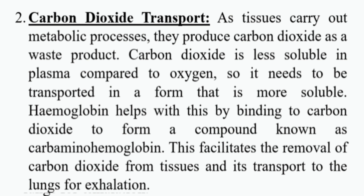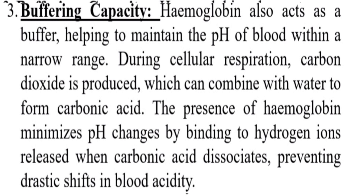Carbon dioxide transport: As tissues carry out metabolic processes, they produce carbon dioxide as a waste product. Carbon dioxide is less soluble in plasma compared to oxygen, so it needs to be transported in a form that is more soluble. Hemoglobin helps with this by binding to carbon dioxide to form a compound known as carbaminohemoglobin. This facilitates the removal of carbon dioxide from tissues and its transport to the lungs for exhalation. Buffering capacity: Hemoglobin also acts as a buffer, helping to maintain the pH of blood within a narrow range. During cellular respiration, carbon dioxide is produced, which can combine with water to form carbonic acid. The presence of hemoglobin minimizes pH changes by binding to hydrogen ions released when carbonic acid dissociates, preventing drastic shifts in blood acidity.